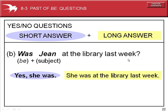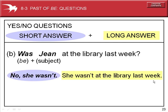Was Jean at the library last week? Short answer: 'Yes, she was.' Long answer: 'She was at the library last week.' In the negative — 'Was Jean at the library last week?' Short answer: 'No, she wasn't.' Long answer: 'She wasn't at the library last week.'